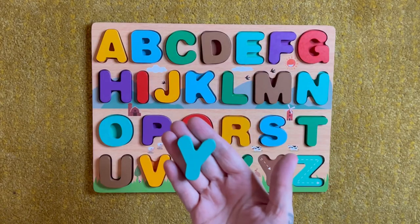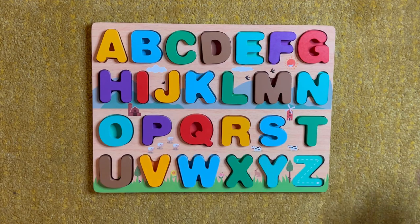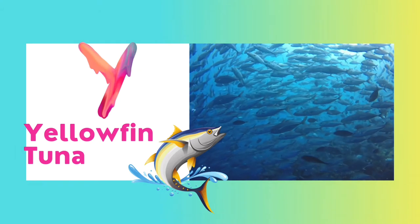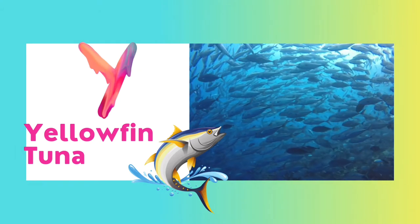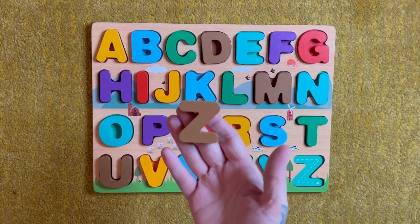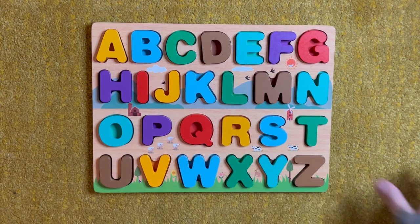Y. Y is for yellowfin tuna. Z. Z is for zebra.